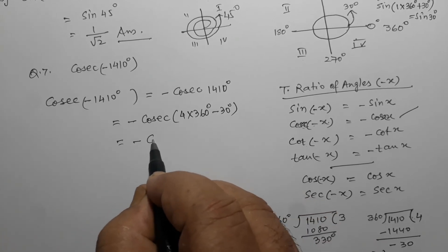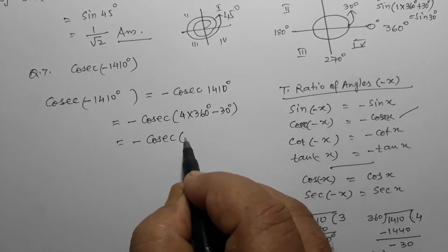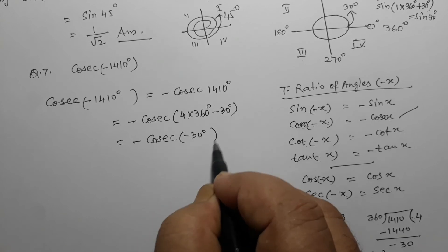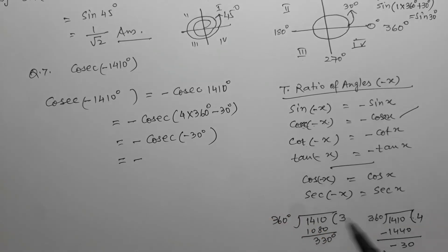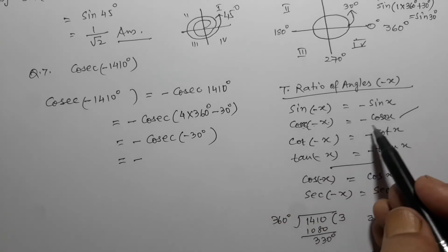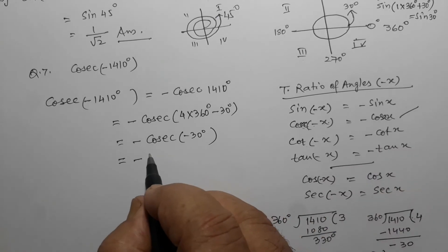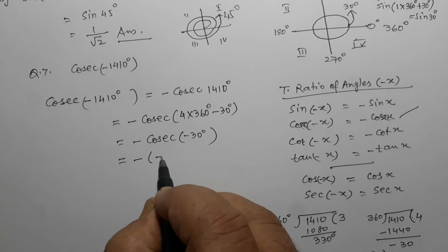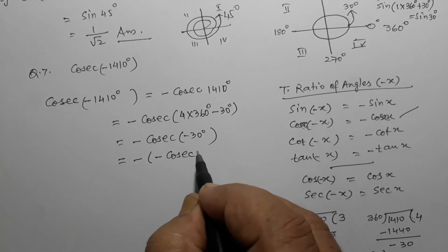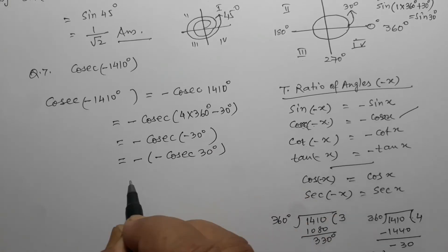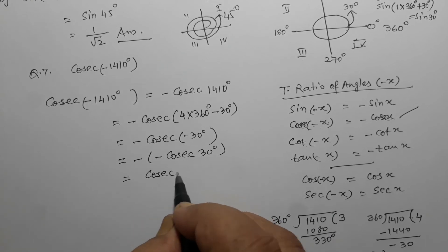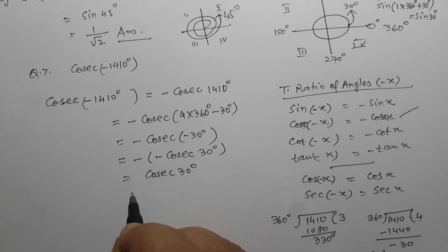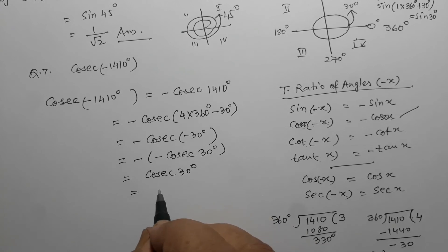Since n × 360° can be ignored, it becomes −cosec(−30°). Again, applying cosec(−x) = −cosec x, we get −(−cosec 30°) = −(−cosec 30°). So this minus and minus gives plus cosec 30°. The value of cosec 30° is 2. So the answer is 2.